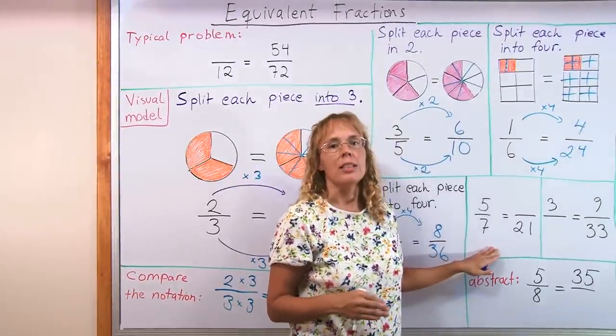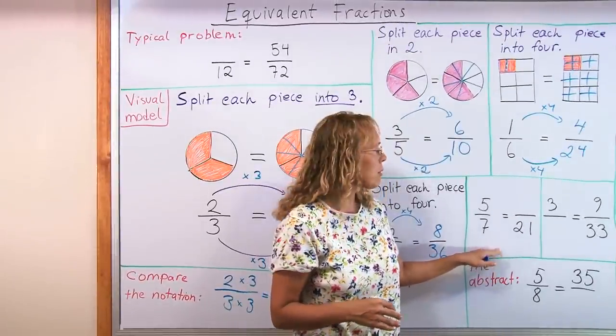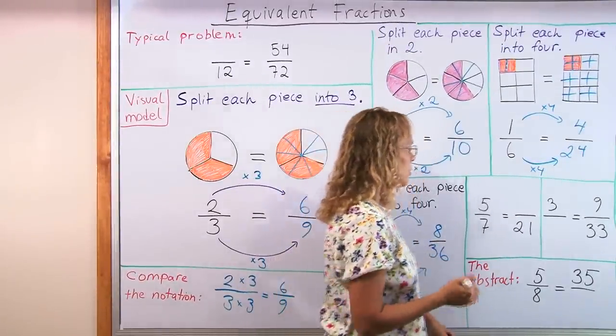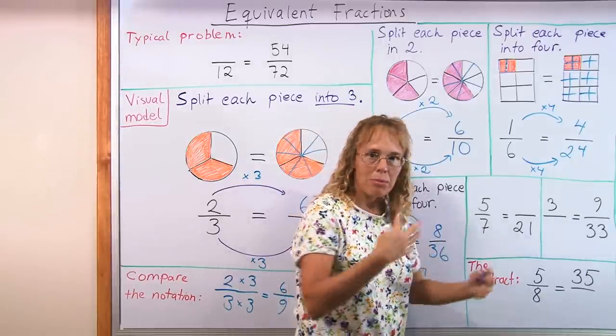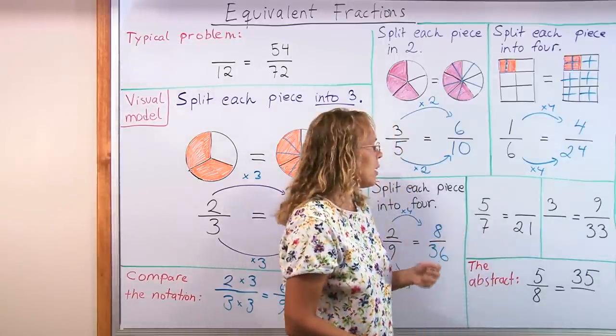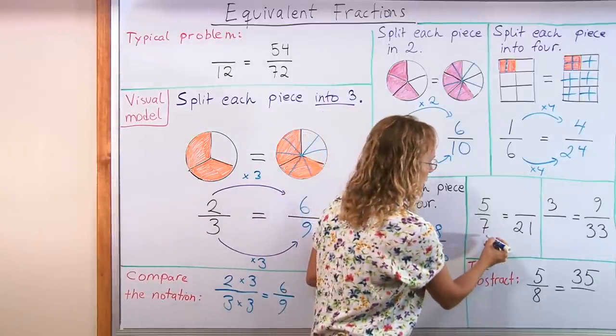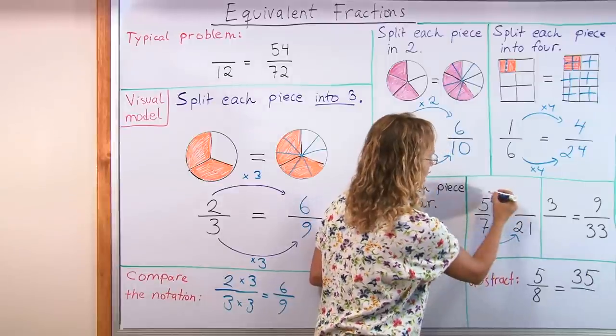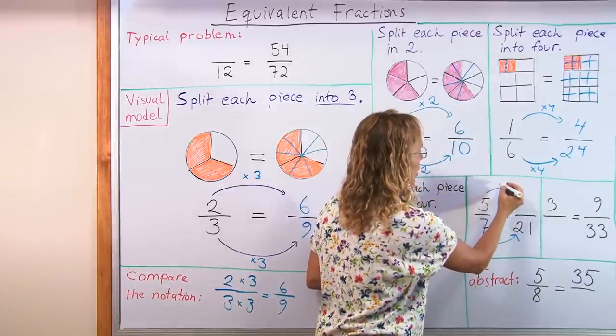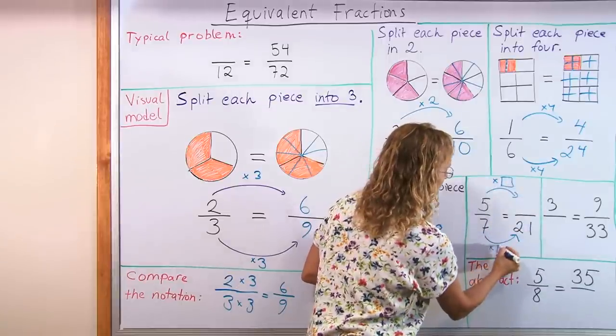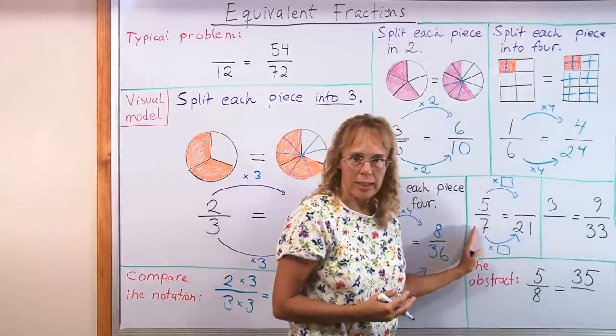And here we have one number missing from this problem with equivalent fractions. And it is basically we are coming towards the more abstract and more abstract form. If you want to help the students, you could draw beforehand these arrows and put here times an empty box. Times an empty box.